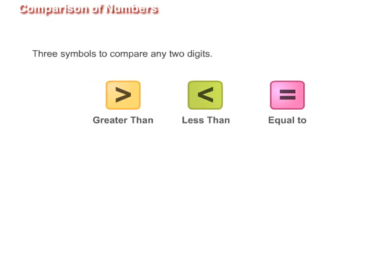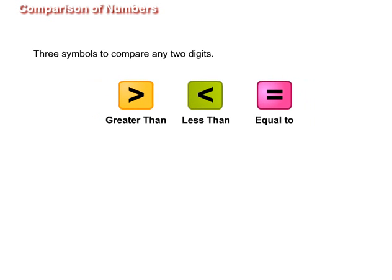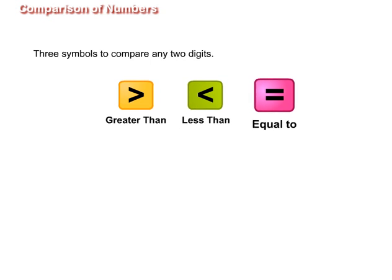Comparison of Numbers. We will now understand the concept of comparison of numbers. There are three symbols to show comparison between any two digits: greater than, less than, and equal to.